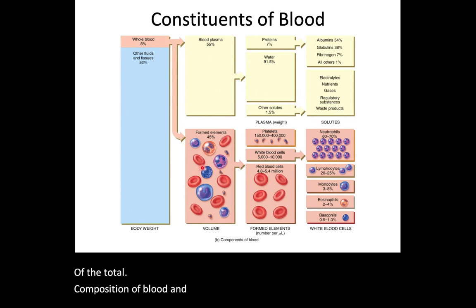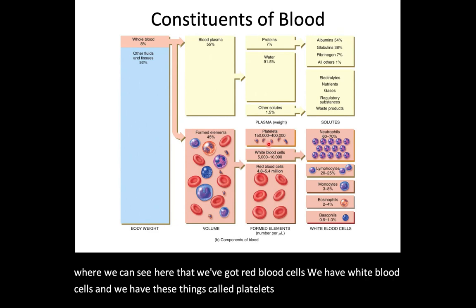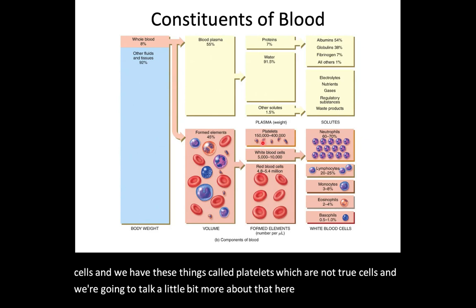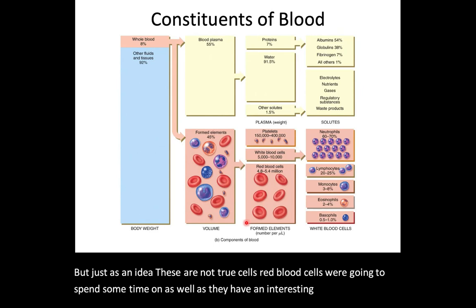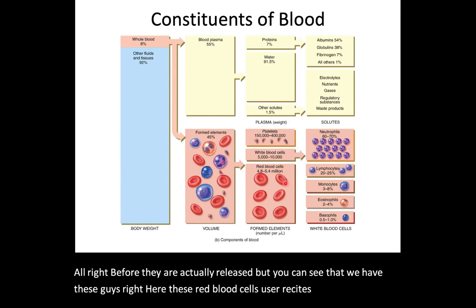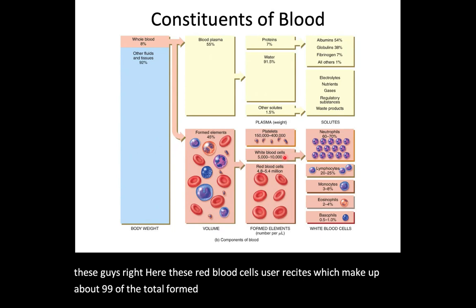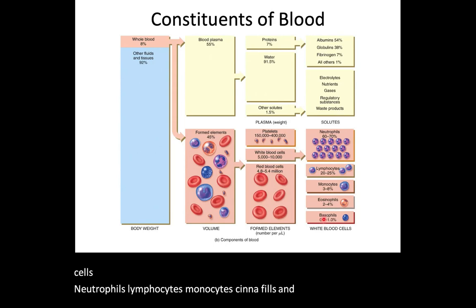What makes up these formed elements? We have red blood cells, we have white blood cells, and we have platelets, which are not true cells. Red blood cells — erythrocytes — make up about 99% of the total formed elements. Then we have our white blood cells: neutrophils, lymphocytes, monocytes, eosinophils, and basophils, with their respective percentages shown here.